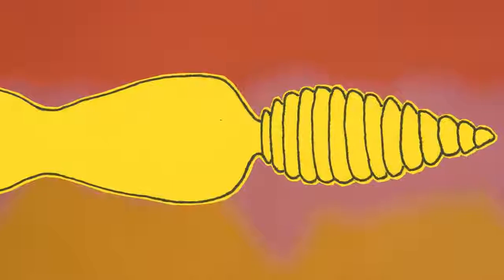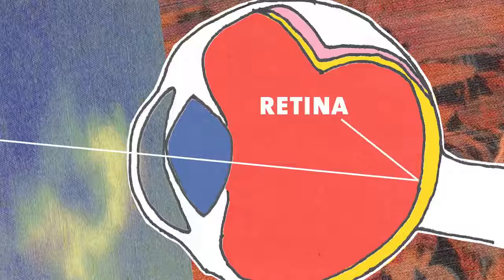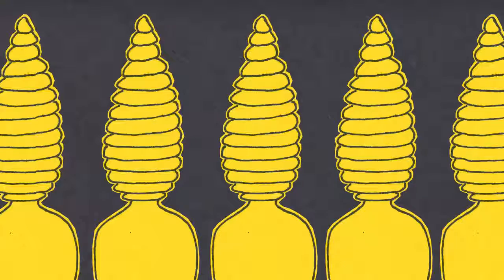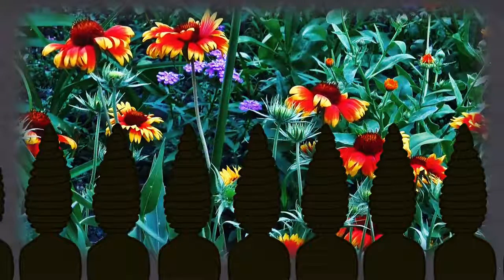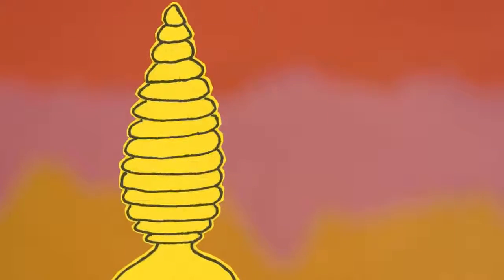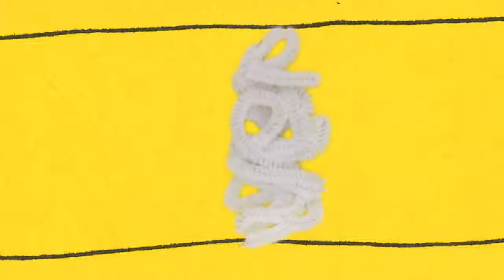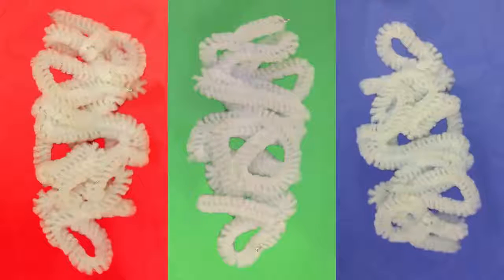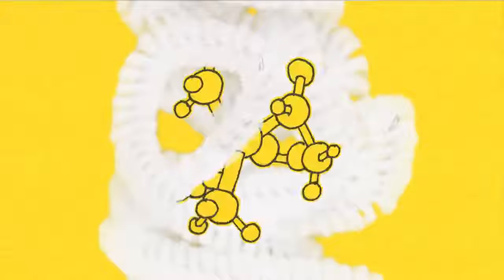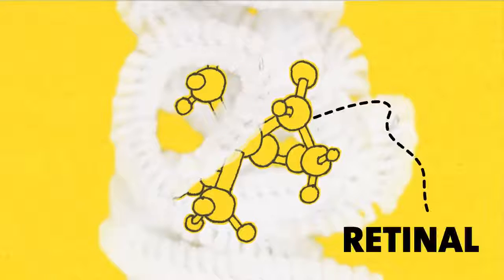A cone cell is a cell in the retina of your eye, and the field of cone cells can translate all kinds of different colors that we see in the environment. The cone cell has an amazing protein embedded in its membrane called an opsin. There's a red opsin protein, a green opsin protein, and a blue opsin protein, and this protein has a little molecule in it called retinol.